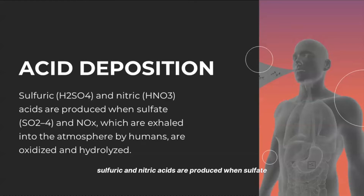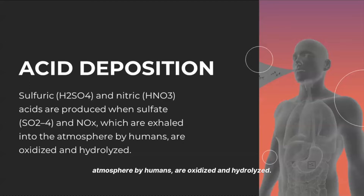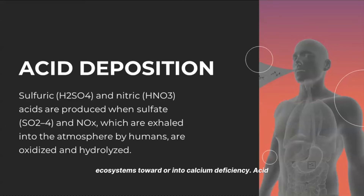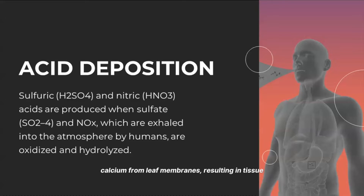In acid deposition, sulfuric and nitric acids are produced when sulfate and nitrogen oxides, which are emitted into the atmosphere by humans, are oxidized and hydrolyzed. These acids are subsequently delivered to ecosystems by precipitation or condensation of water vapor on plants and are responsible for pushing terrestrial ecosystems toward or into calcium deficiency. Acid fog contact with foliage immediately removes calcium from leaf membranes, resulting in tissue damage and calcium depletion in plants.